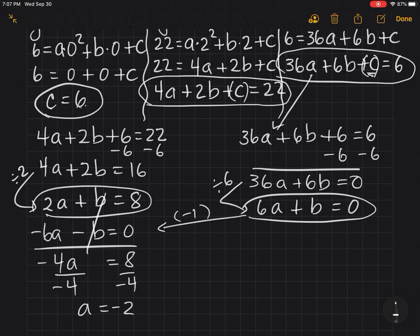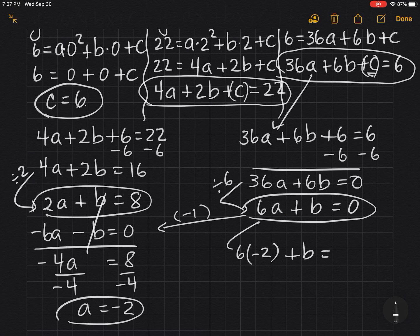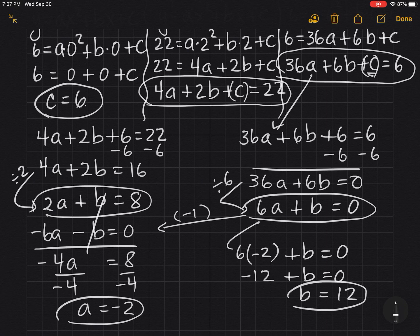And a = -2. Now let's get focused. What am I looking for? Now I know a, I know c, I just need to find b. So I can plug it into this equation or I could have went into that equation, either one didn't matter. So 6(-2) + b = 0, -12 + b = 0, so b = 12.